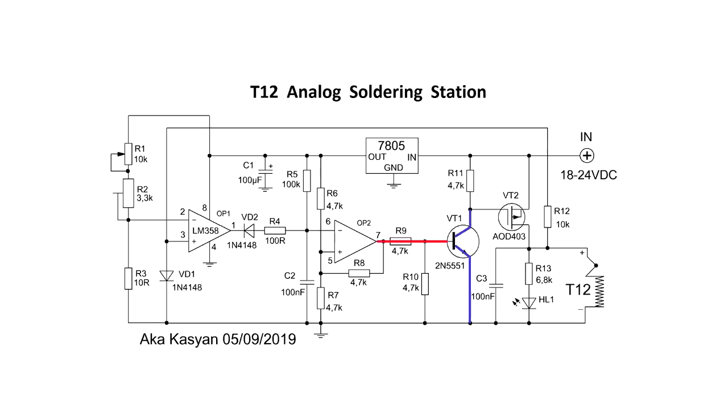A logical 1 triggers a low-power transistor, and voltage to the gate of the power transistor is supplied. As a result, the latter will also work. Through the open channel of the power transistor, power will be supplied to the heater, and the heating will begin.